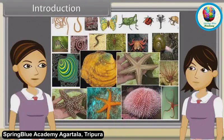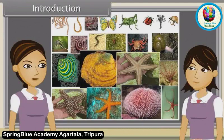Yes, now we are going to discuss characteristics of Hemichordates, Chordates, Vertebrates, Cyclostomata, Chondrichthyes, Osteichthyes, Amphibians, Reptilia, Aves and Mammalia.